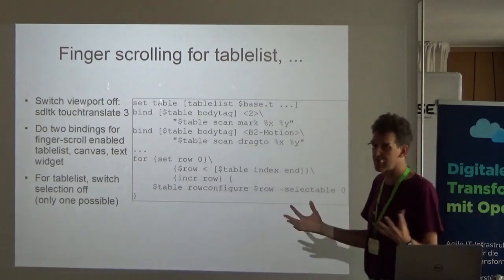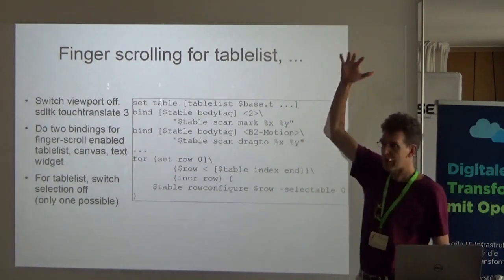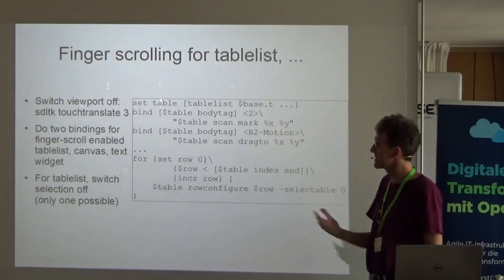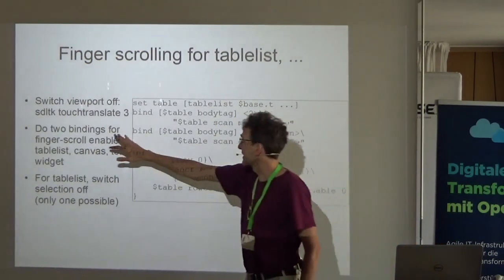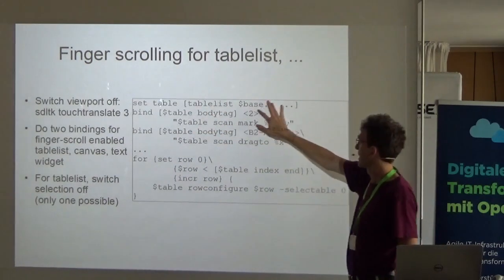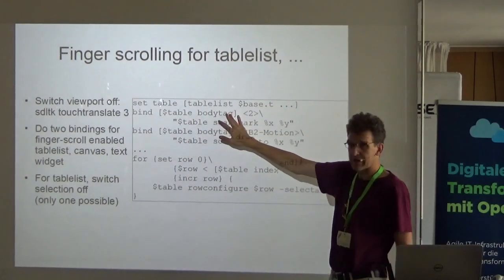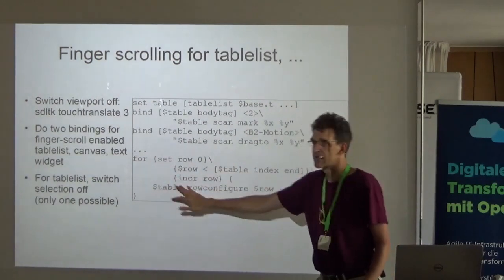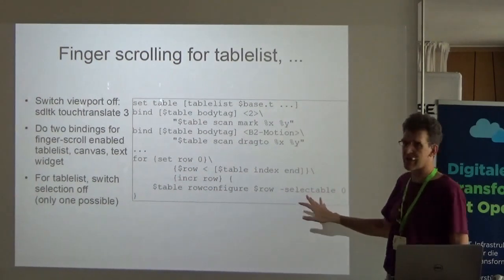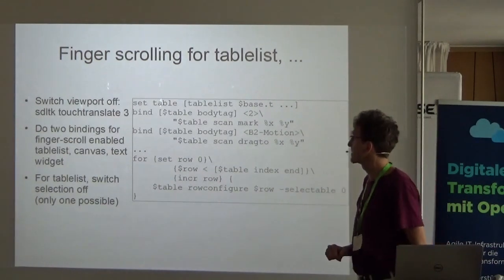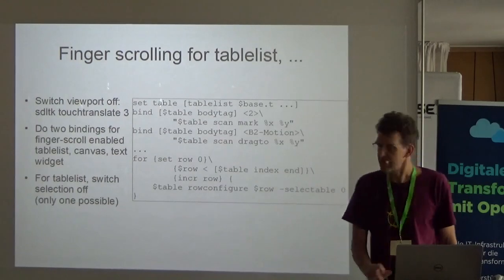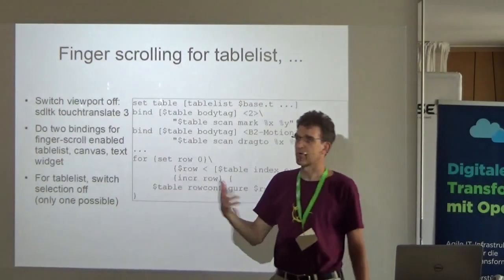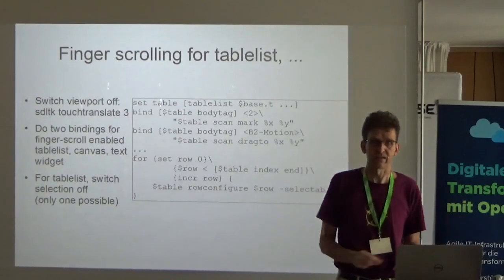Finger scrolling — five years ago I presented that as a big part of script. Someone said it's very easy, you just do it like that. And it's true, it works. You have to do two bindings: one is for the table list, where you use a body tag to bind it. What I did specifically was to disable selection on the table list, otherwise it also selects when you try to scroll. This also works for canvas and text widget. Basically you add those two lines and finger scrolling is done.